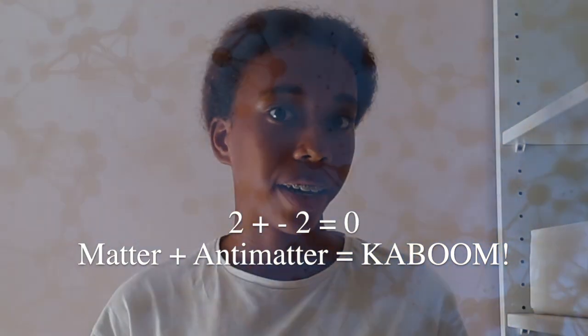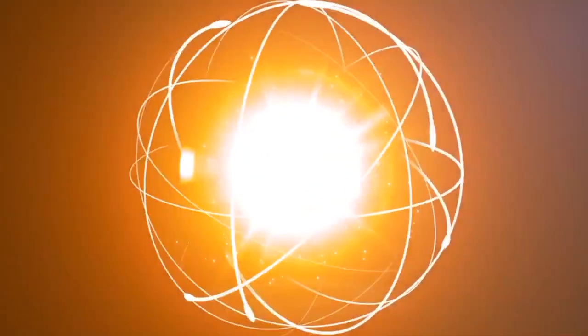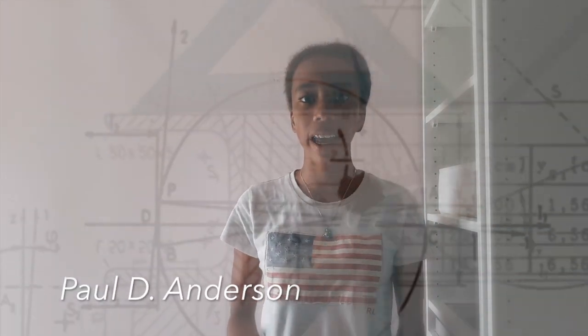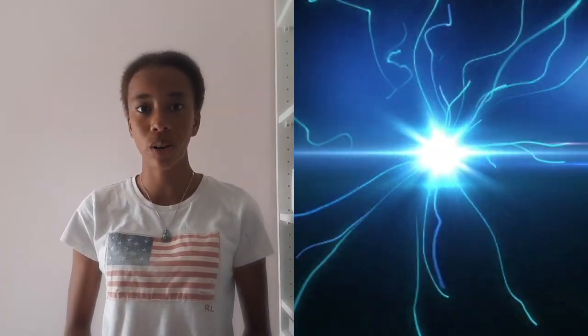If matter and anti-matter were to meet, they would annihilate each other, forming a blast of energy. This was all just a theory, but in 1932, Paul D. Anderson actually saw the anti-electron with his own eyes and named it the positron. This proved Dirac's theory.